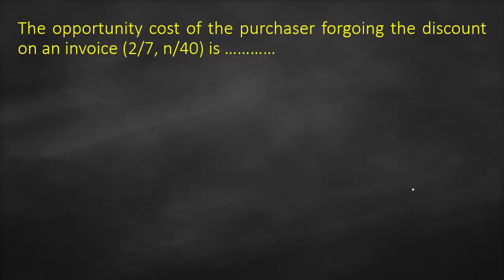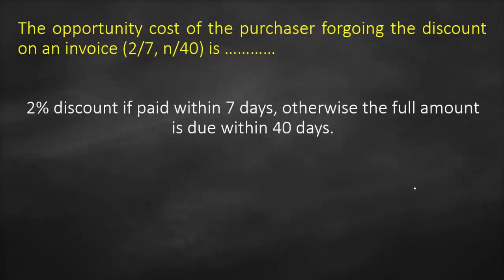The opportunity cost of the purchaser forgoing the discount on an invoice 2/7 net 40. What do we mean by 2/7 net 40? It means the company is willing to offer a discount of 2% if you pay within the first 7 days. Otherwise, you need to pay the full amount on the due date, which is after 40 days.